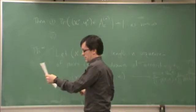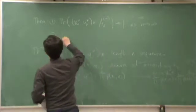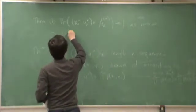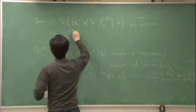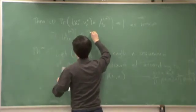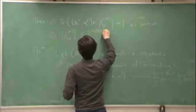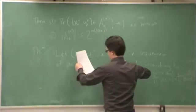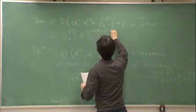Second statement, cardinality of a jointly typical set is less than or equal to 2 to the n H(X,Y), the joint entropy between x and y, plus epsilon.